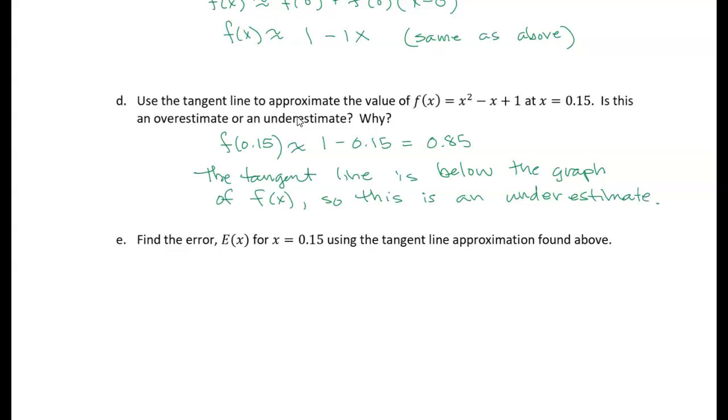And then finally, we're asked to find the error. So we want to find basically the difference between the actual value at 0.15 and the approximation that we just found. So our error at this point, 0.15, is equal to f at 0.15 minus the value we just found, 0.85. So if I evaluate the original function, we had x squared. So I got 0.15 squared minus x, 0.15, plus 1. And then we want to subtract 0.85. So when we evaluate the actual value of the function at 0.15, we get 0.8725. And then if we take the difference between that and 0.85, we get that the error is 0.0225.